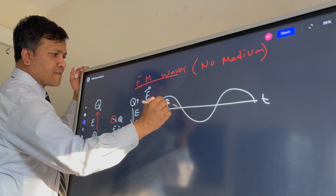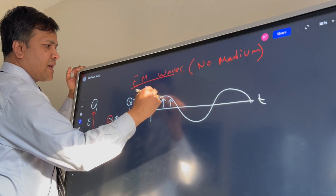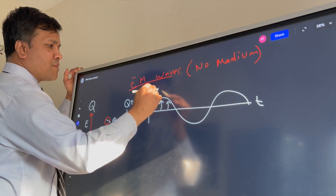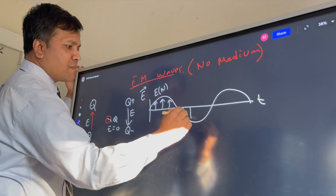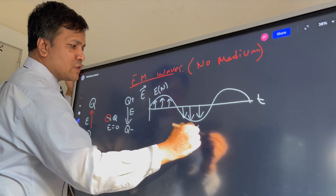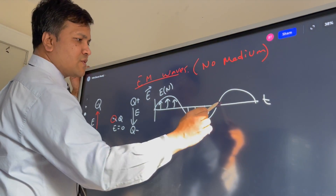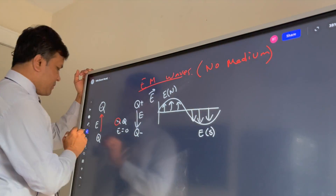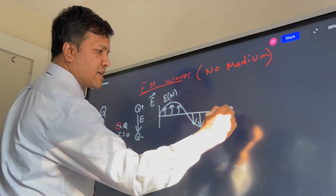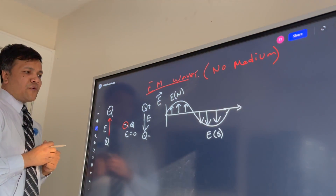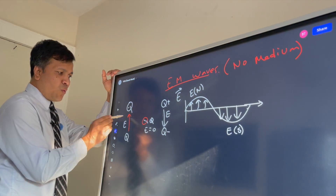The electric field at location A points to the north, and at location B it points to the south. For simplicity, since it propagates to the right, we represent just the electric field component. Now let's talk about the magnetic field.